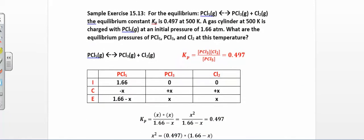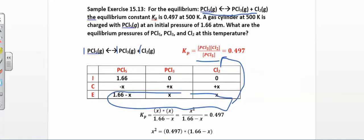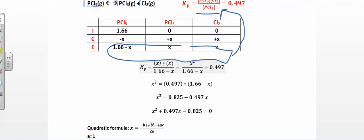Now in this next problem, as soon as you see the equation, write the equilibrium constant expression — products over reactants — to get partial credit at minimum. They give us K and the initial pressure of the reactant; the products start at zero. At equilibrium the reactant is 1.66 − x, and the products are +x and +x. It's a 1:1:1 ratio, so no coefficients to worry about.